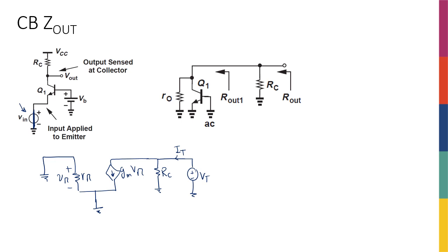Immediately looking at this circuit, I can see that V_pi is actually equal to zero, because it's between ground and ground, so there's no voltage across this resistor. So V_pi is zero, therefore gm*V_pi is equal to zero. Since gm*V_pi equals zero and it's a current source, that means it's going to be open circuit.